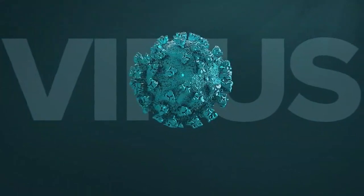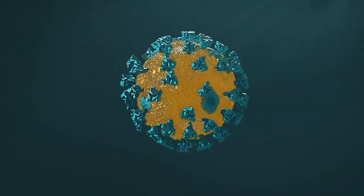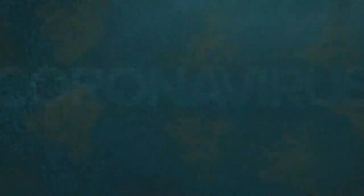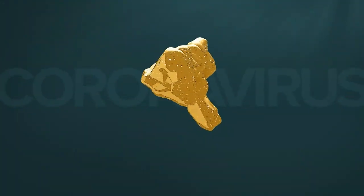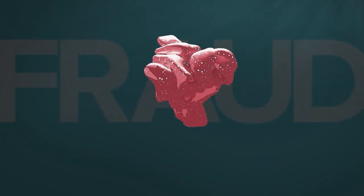But to do that, the virus needs something it doesn't have: a cell. So it evolved a clever way to get inside yours. The key is the outside envelope and the crown of spikes that gives coronavirus its name. It's not decorative, this is an elaborate disguise, a fraud the virus uses to trick its way in.